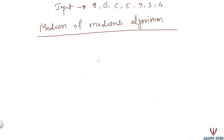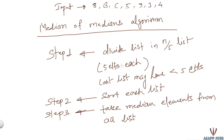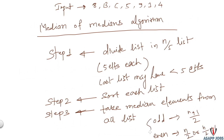There is another pivot selection strategy called the Median of Medians algorithm, which also brings worst-case time complexity down from O(n²) to linear time. In step one, we divide the list into n/5 sublists, each having 5 elements (the last list may have fewer). In step two, we sort each sublist. In step three, we take the median from each list — at position 3 for full lists of 5. For the last list, if its size is odd the median is at position (n+1)/2, and if even at n/2 or n/2+1. We form a new list of medians and repeat from step one until we get a single median value.